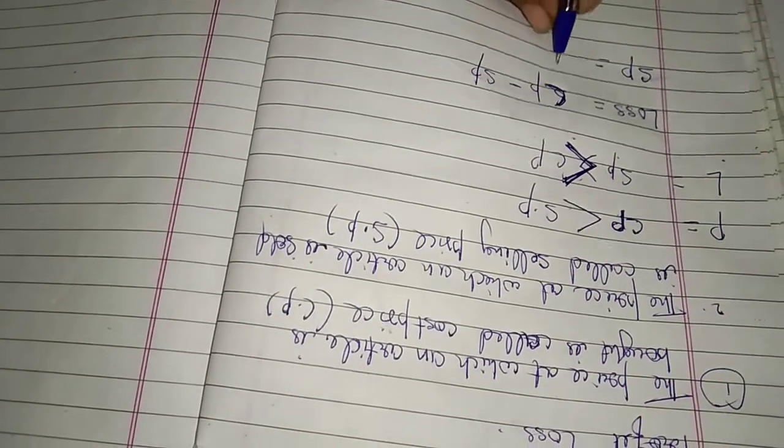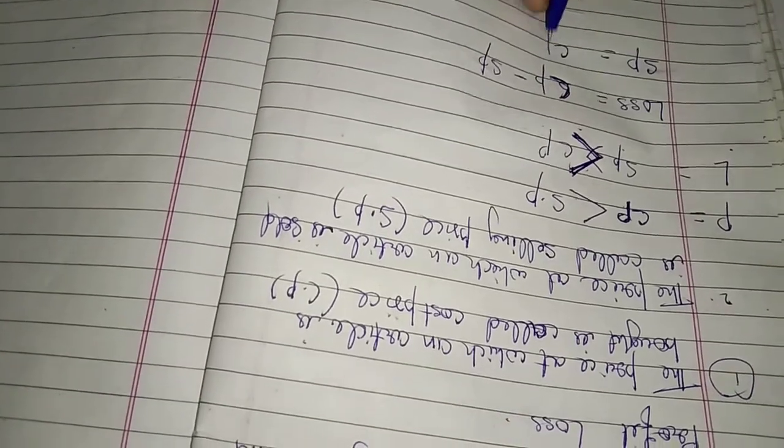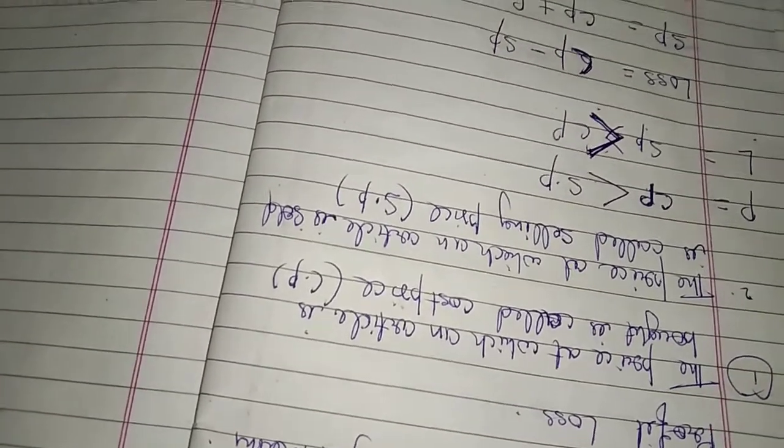SP is equal CP plus profit. So see this one, this is the formulas. SP is equal cost price plus profit and selling price is equal cost price minus loss. SP equals CP plus profit, SP equals CP minus loss.